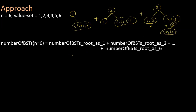Basically, the total number of BSTs with n equal to 6 can be written as: number of BSTs with root as 1, plus number of BSTs with root as 2, plus and so on until number of BSTs with root as 6.